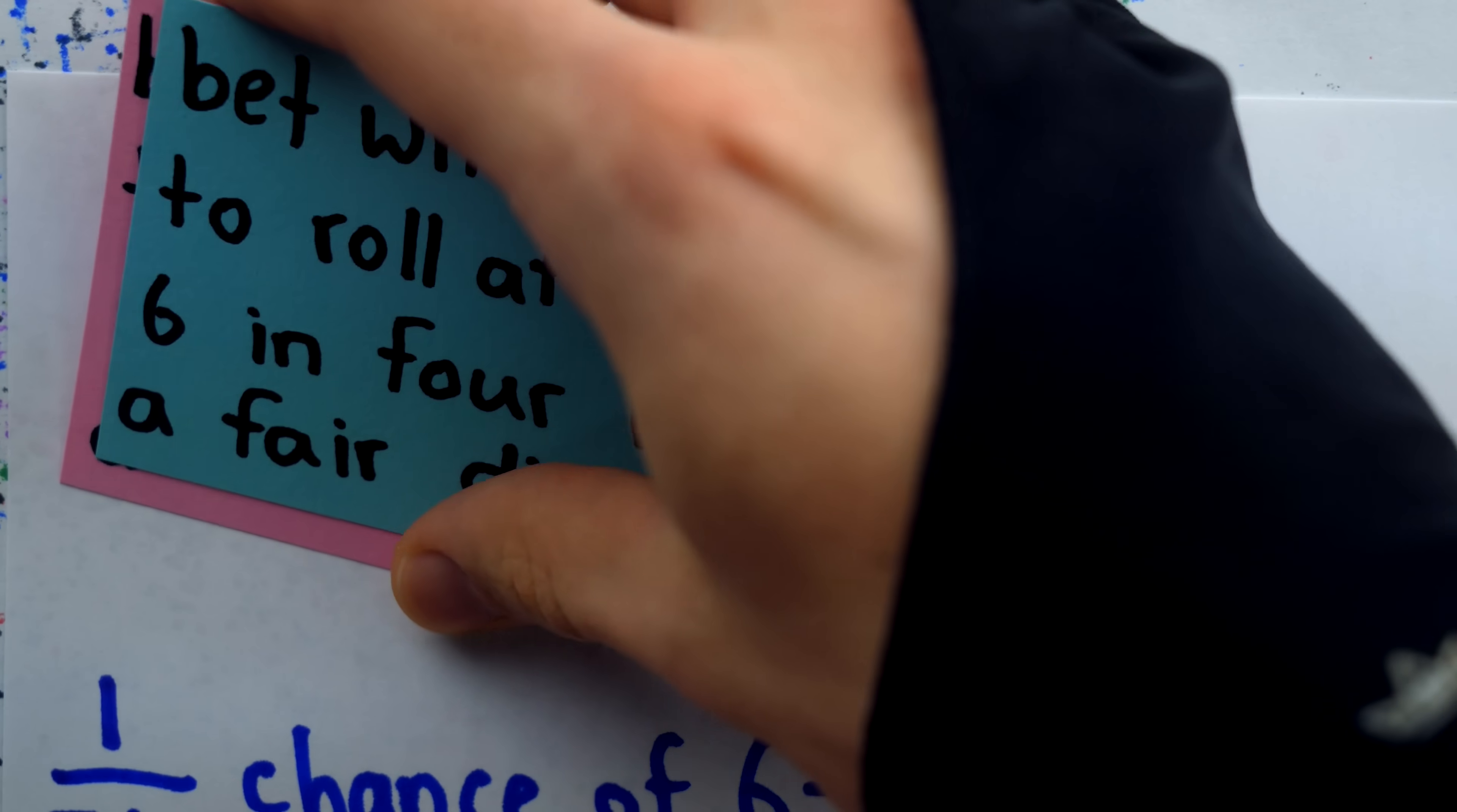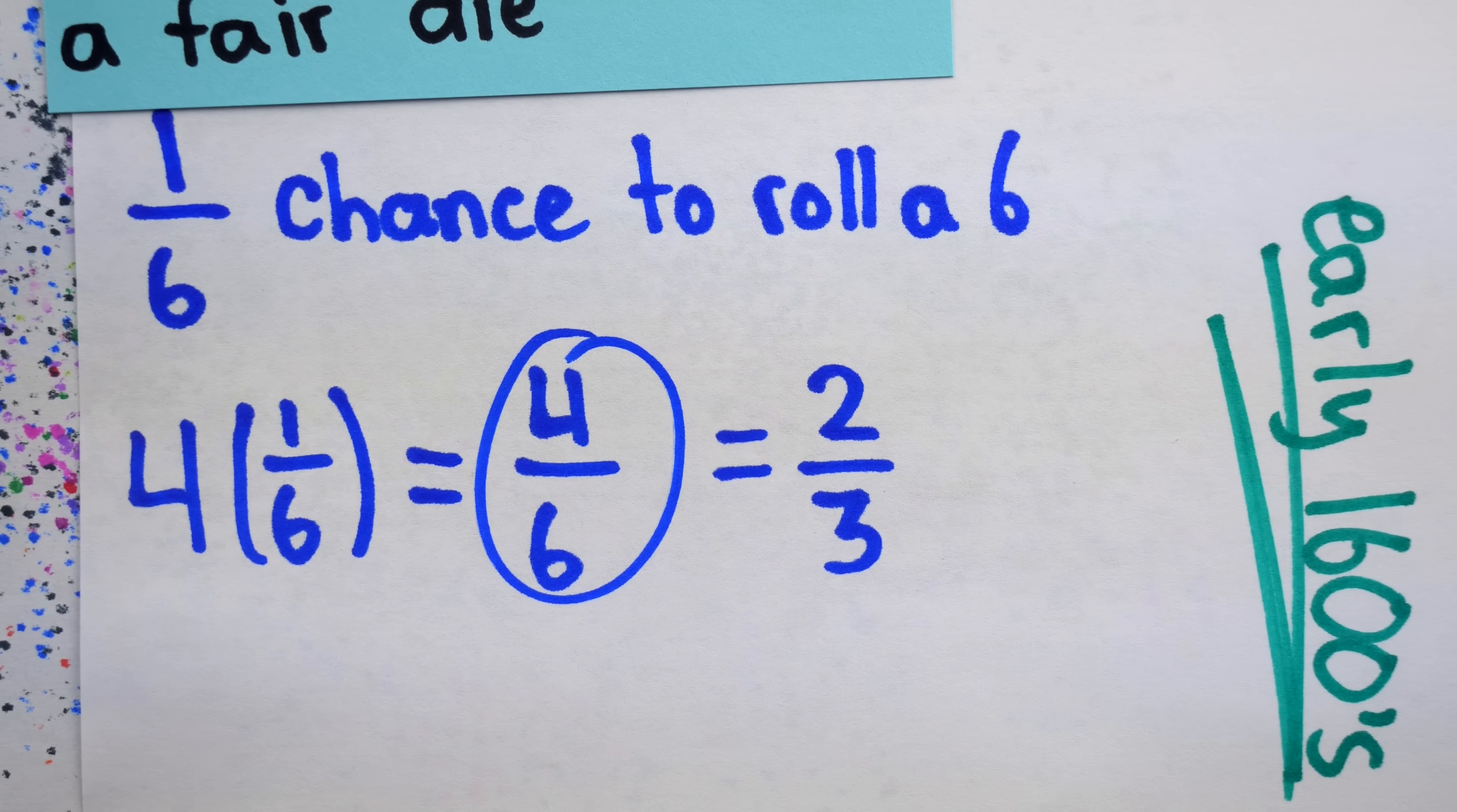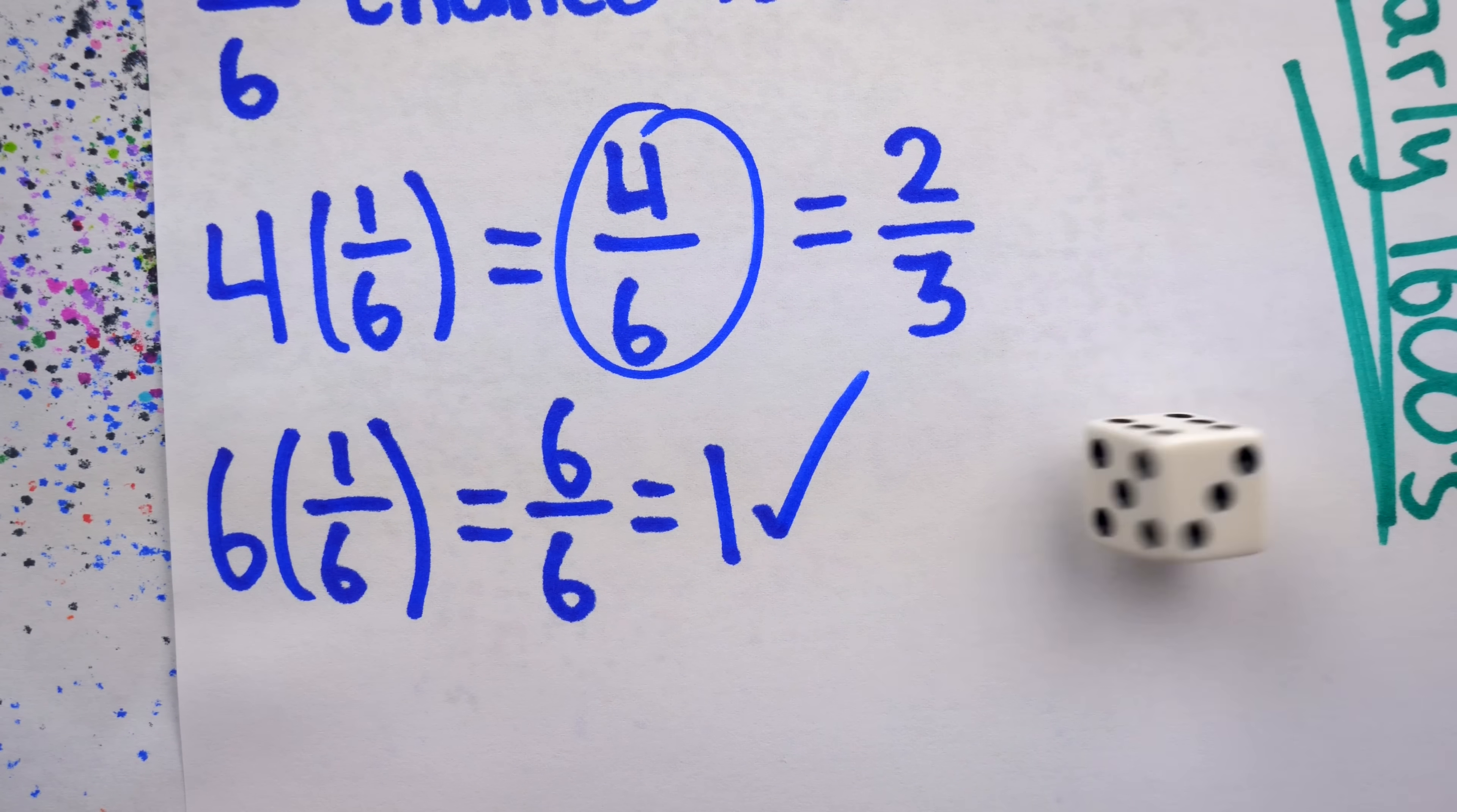Sure enough, both of Demirei's calculations were incorrect, and this is easy to realize if you attempt to extend his methods of reasoning. He figured that the one in six chance of rolling a six on a single die implied that in four rolls, there would be a four out of six chance to roll at least one six. But then, of course, it would follow that in six rolls of a die, there is a six out of six, or 100% chance guaranteed that you're going to roll at least one six. And this is an absurdity, since it's certainly possible for a die to be rolled six times without a single six coming up.